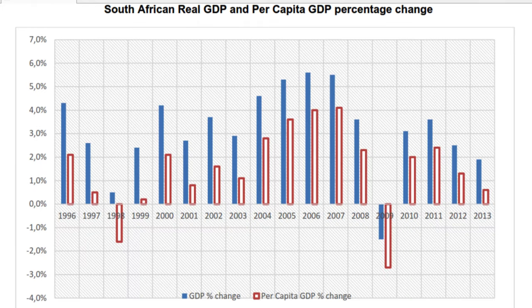Before we look at other economic indicators, let's talk about the table I asked you to look at. The blue bar represents economic growth and the red bars represent economic development — because GDP measures growth and per capita GDP measures development. From the graph, we can clearly see that our economy grows more than it develops. Economic development had a negative growth rate in 1998 and 2009, while economic growth only had a negative growth rate in 2009. South Africa experienced its highest growth and development rates from 2004 to 2007.